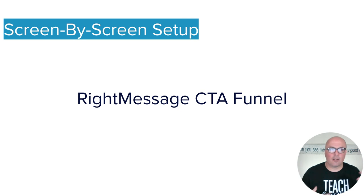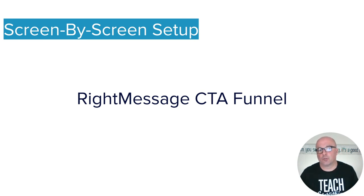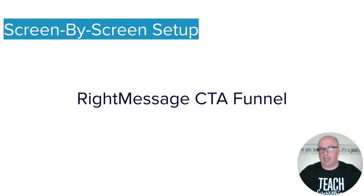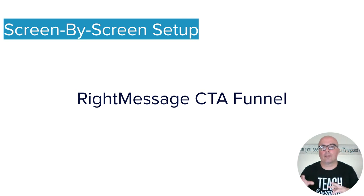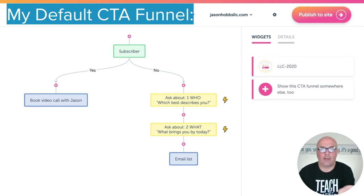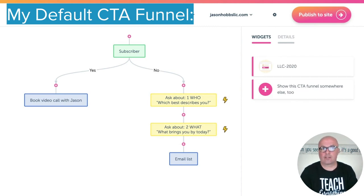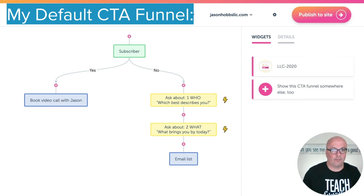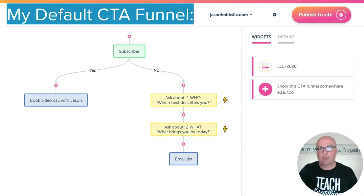Let's do a quick screen-by-screen walkthrough of a setup for that initial RightMessage CTA funnel. Keep in mind, this doesn't showcase everything possible with RightMessage. What it does is walk through setting up the one I just showed you — having RightMessage decide: is this already a subscriber? And then based on the answer of yes or no, it's either going to send them down the yes path or the no path.